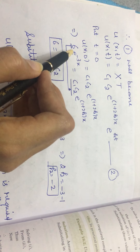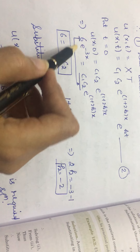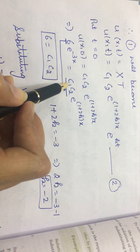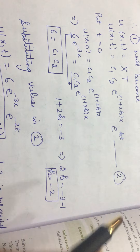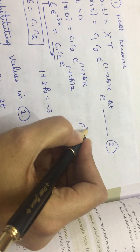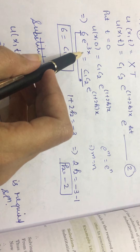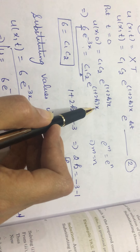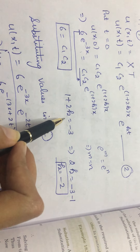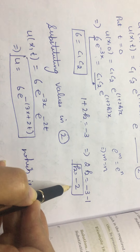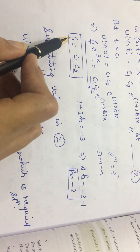The initial condition gives u(x, 0) = 6e^(-3x). So C₁·C₂·e^((1+2K)x) = 6e^(-3x). Equating coefficients: C₁·C₂ = 6, and comparing exponents, 1 + 2K = -3, so K = -2. These are the values for the product of the constants and for K.